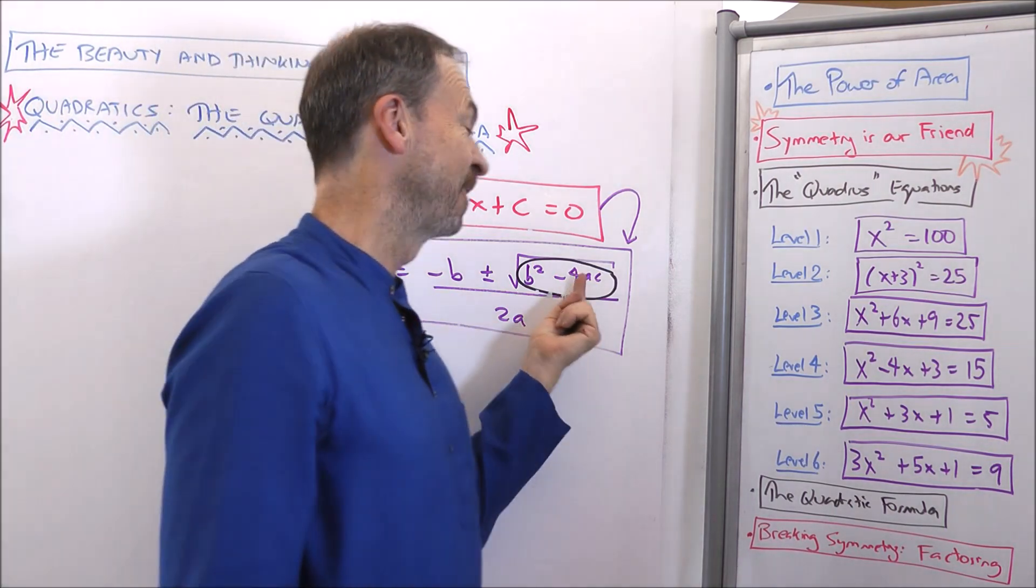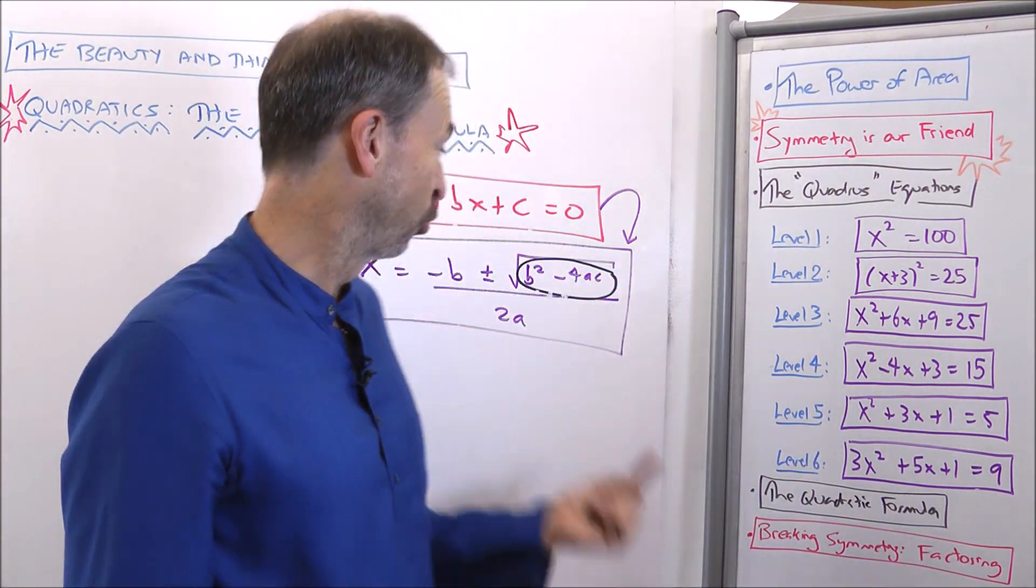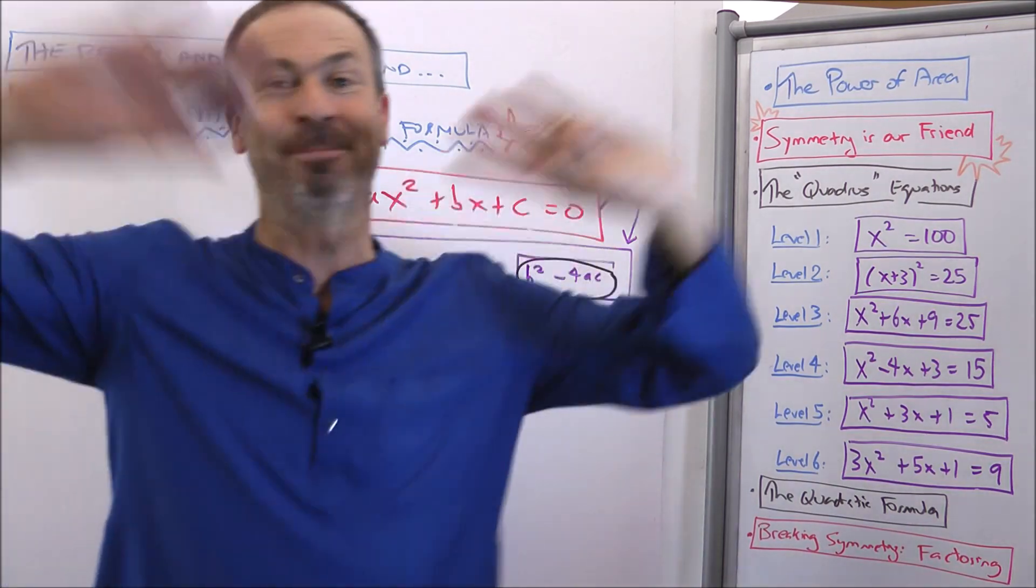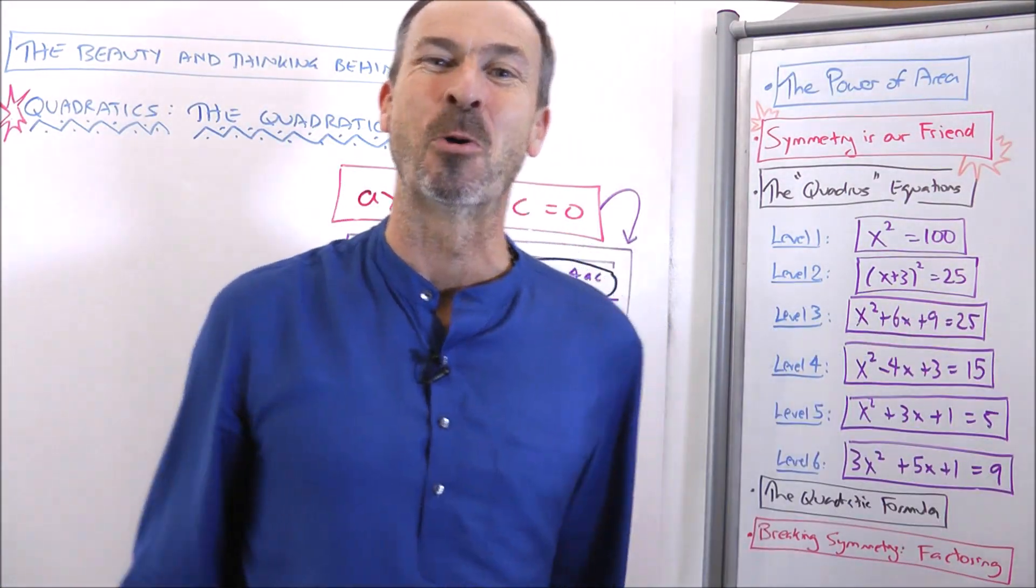And if b squared minus 4ac turns out to be a negative number, then you're trying to hit the square root of a negative number, you say, oh oh oh, can't do it, can't do it, in which case there's no solutions.